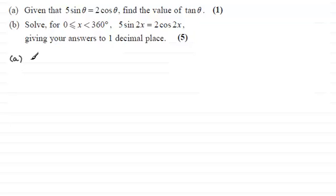For part (a) we've got 5sinθ = 2cosθ. For one mark, this has got to be easy, and indeed it is, because all we've got to do is divide both sides by cosθ.